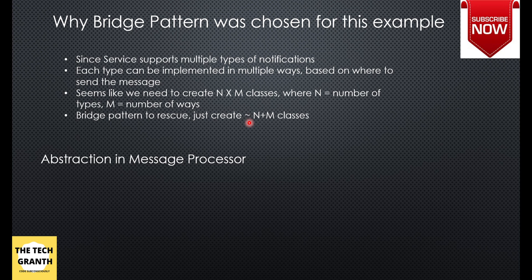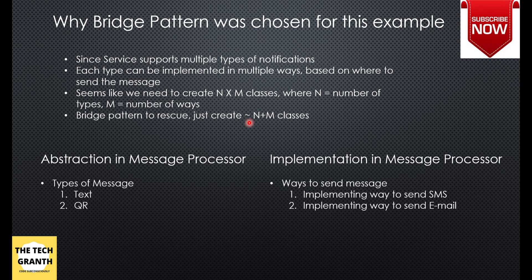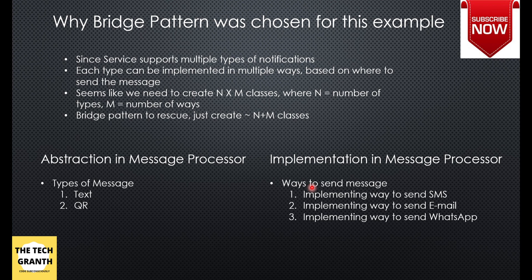In this message processor, the abstraction is the types of message — text and QR code — and the implementation is the way to send the message: SMS, email, and WhatsApp. That is the N part and the M part respectively. The Bridge pattern creates a bridge between these two, making it easy to build the notification service. Now let's jump into the code and see how to implement the Bridge pattern.